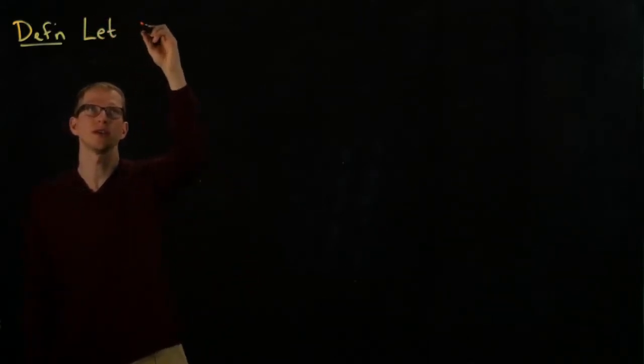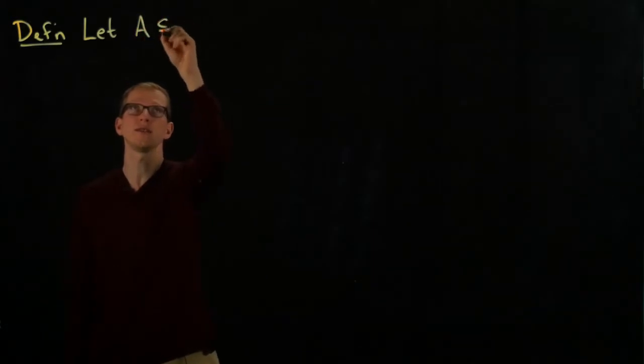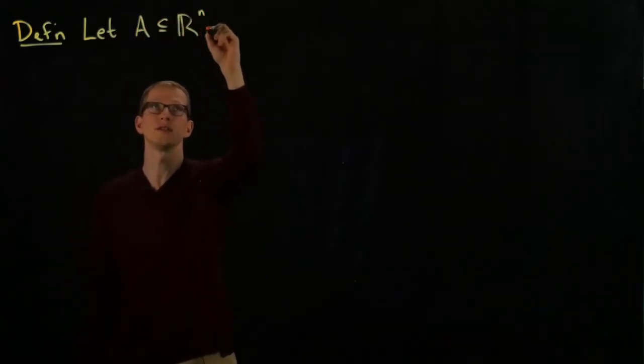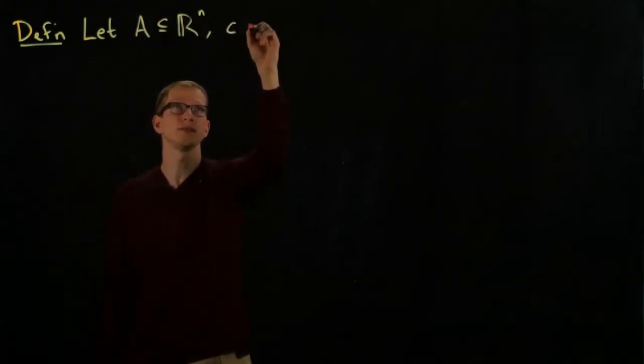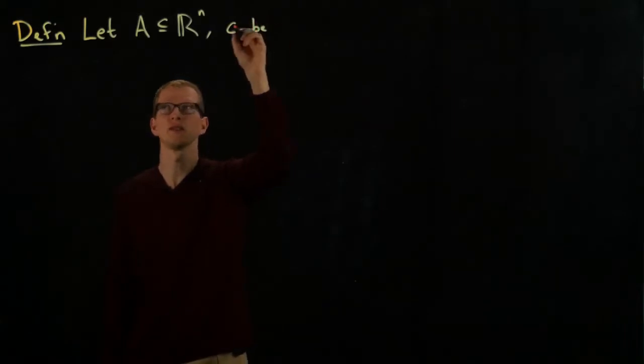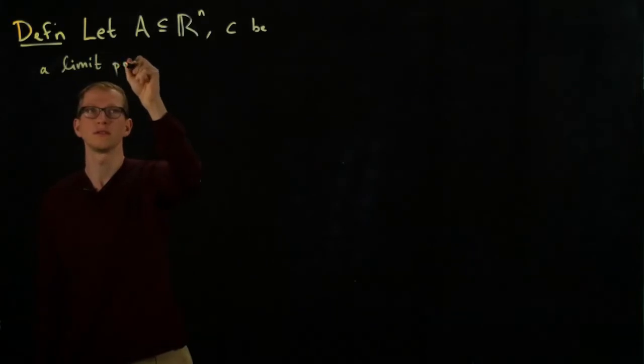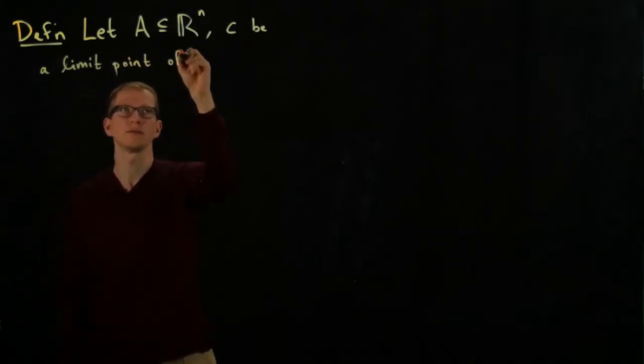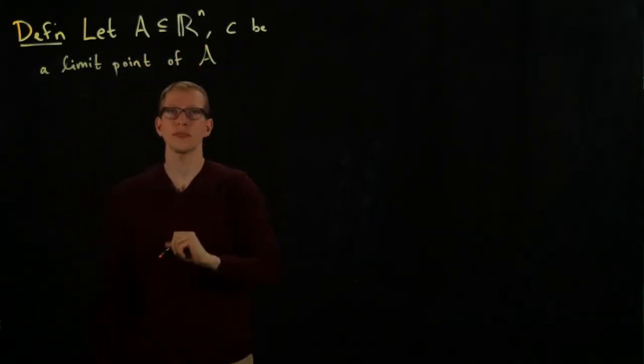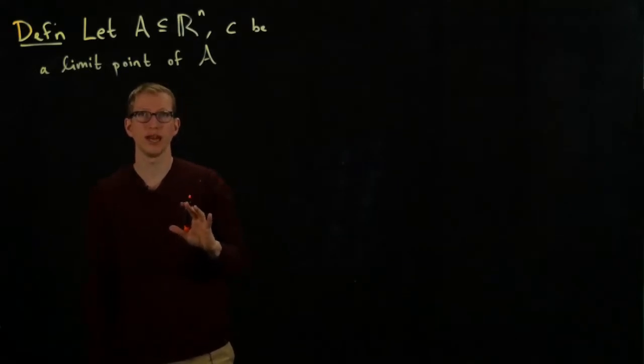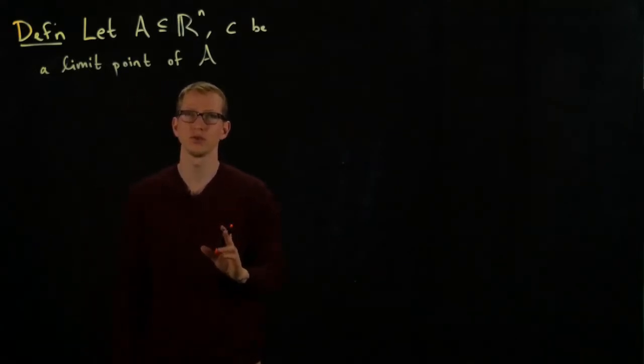So we'll first set our domain. Let A be a subset of R^n. Let C be a limit point of A. And C does not necessarily have to be actually an element of A. We're just going to assume it's a limit point.